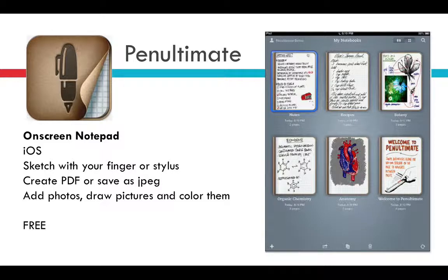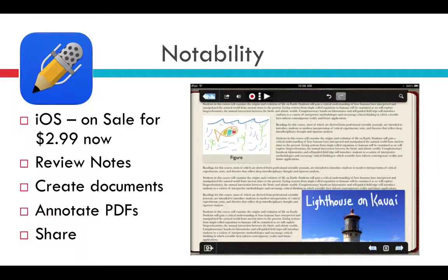Let me introduce you to a couple of note-taking apps that work well for client visits and for meetings. Penultimate is free — you can sketch on screen with your finger or a stylus, save what you've written as a PDF or JPEG, and drag in photos and other things. It's a lot more fun and versatile than just typing on a glass screen. Notability, sometimes as low as $2.99, allows you to draw, type, add photos, and annotate. You can pull in PDFs and other documents that you can annotate directly on the screen. But its coolest feature is its lecture recording function. Let me show you how this app works on my iPad.